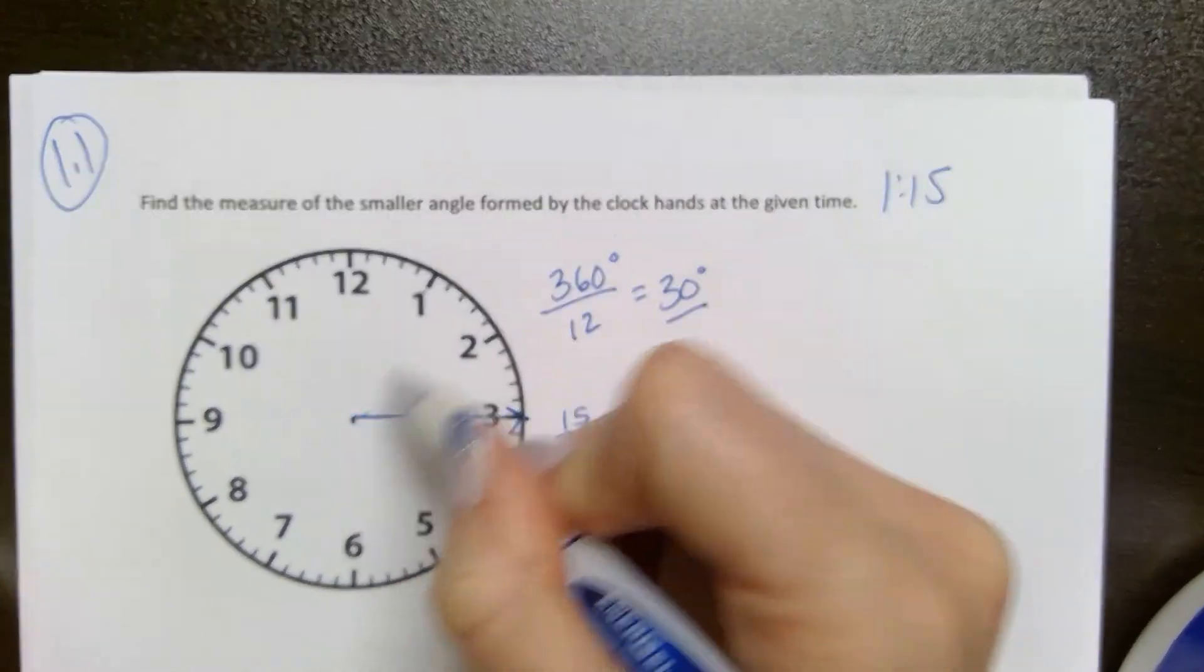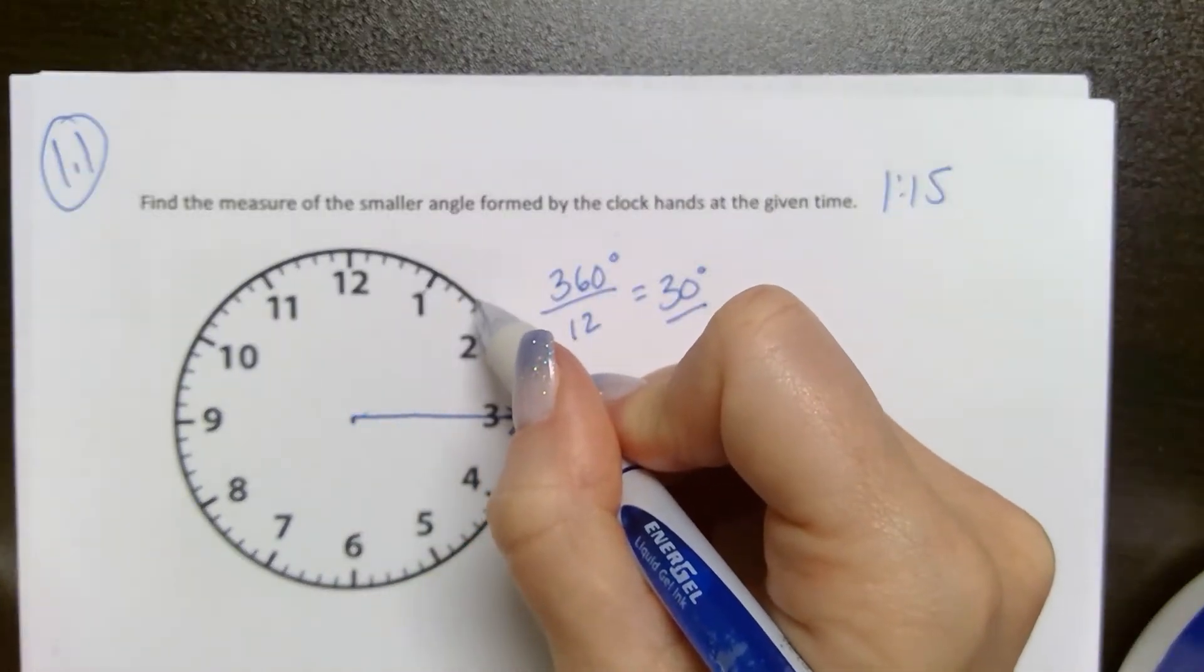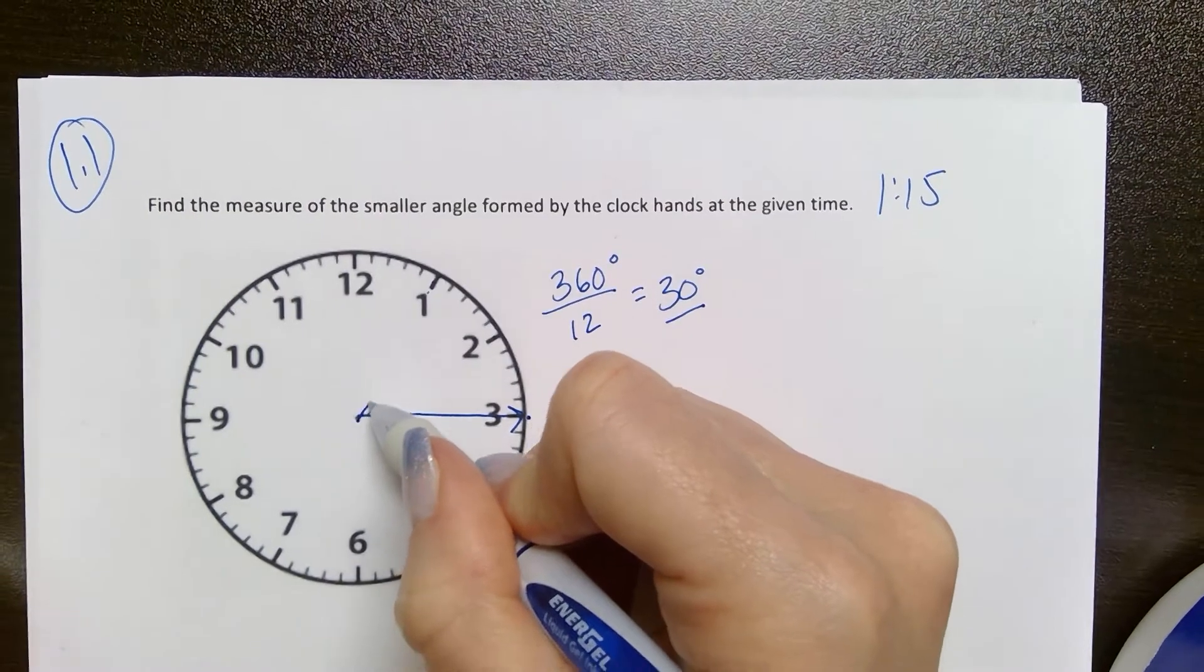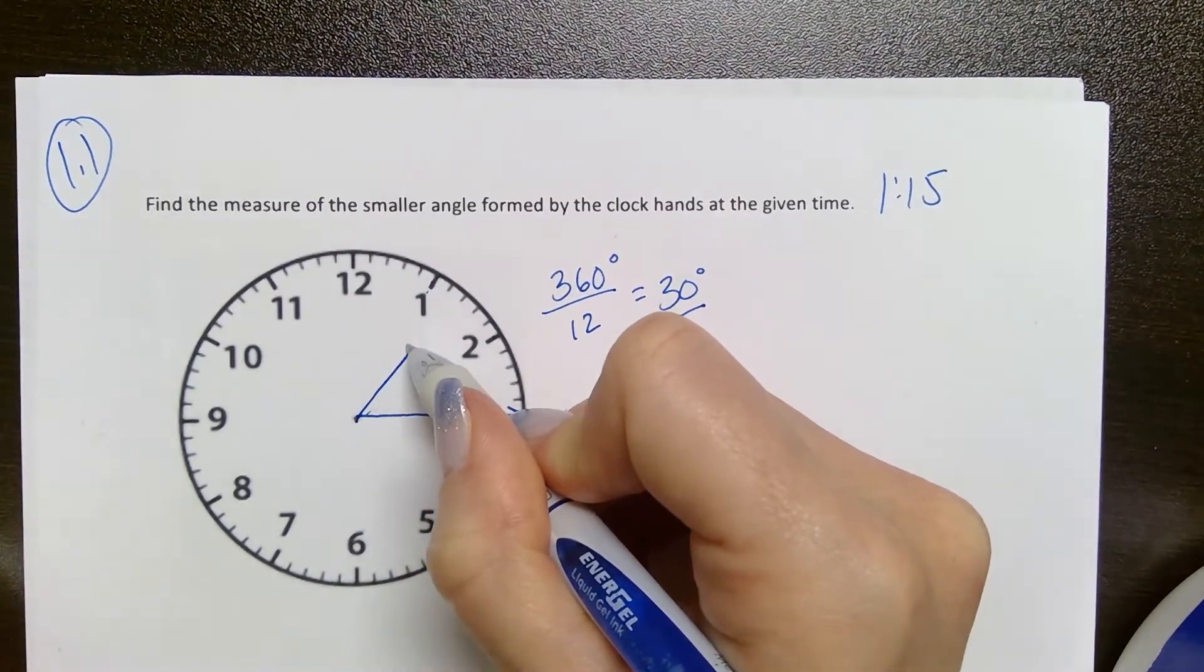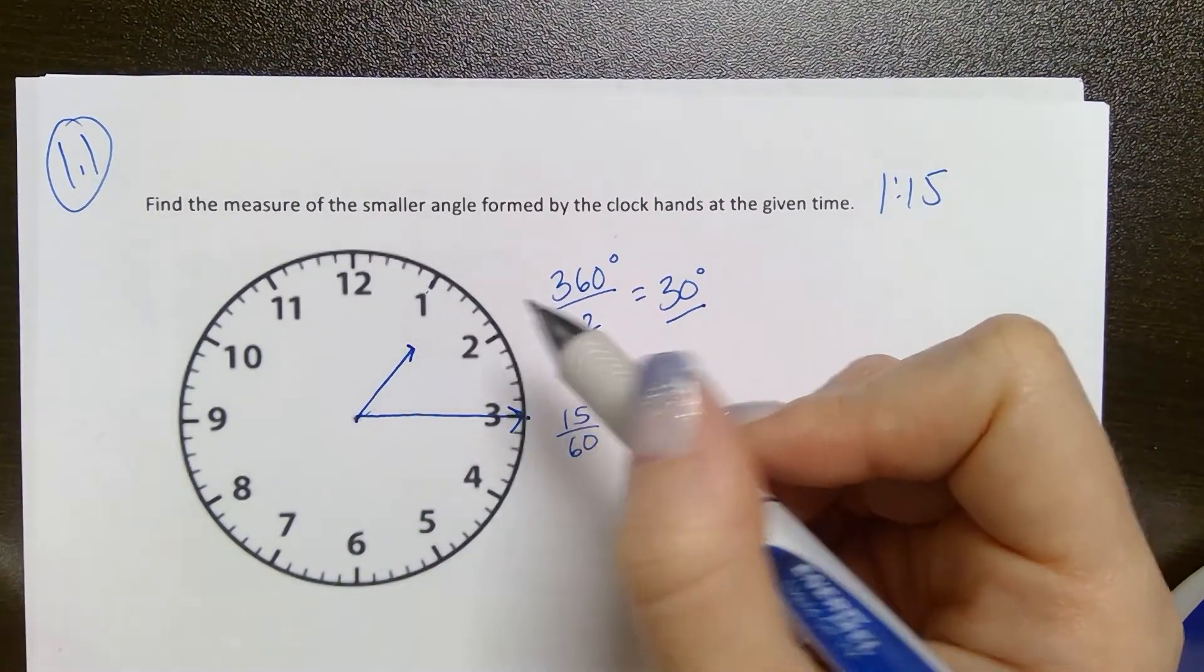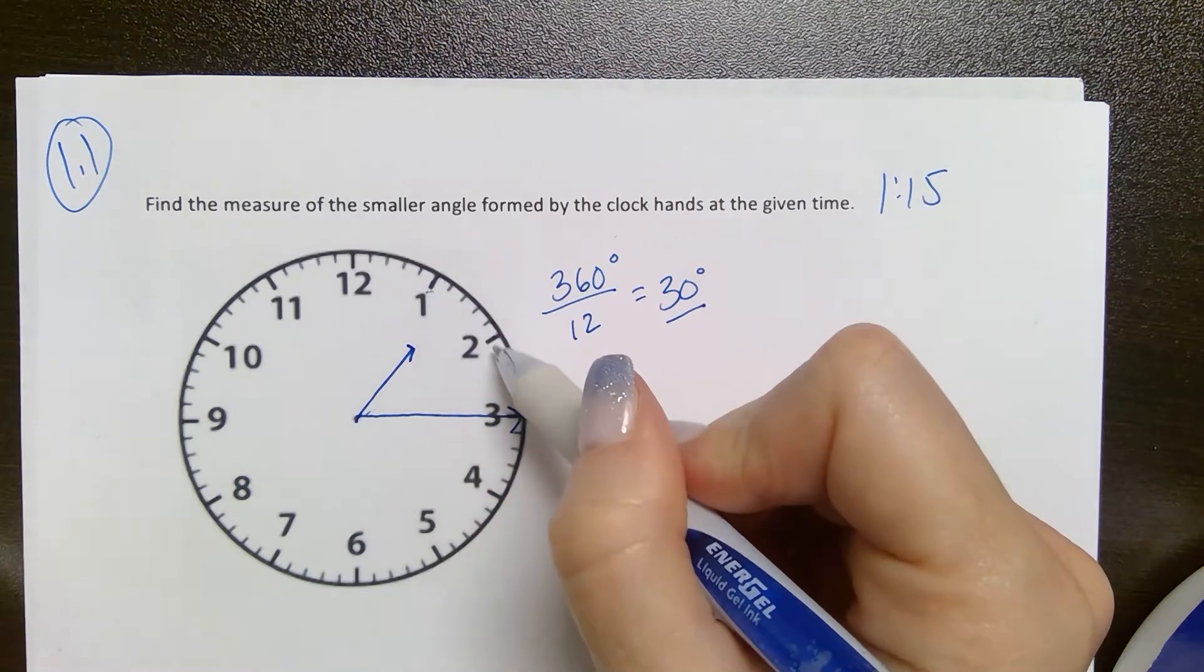So we're going to kind of guesstimate. That would be a half, so a fourth is going to be about right there. So there's my hour hand. It's moved a fourth of the way past the 1 toward the 2.